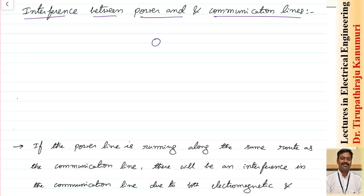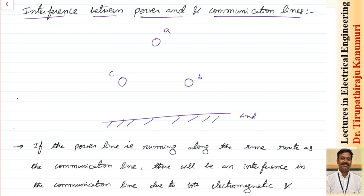Let us take three conductors of a transmission line — A, B and C. They are kept at the three sides of an equilateral triangle, and let us assume this is the ground. A communication line is traveling nearby, having two conductors — the positive and negative conductor — represented as D and E.